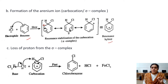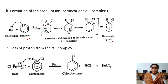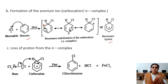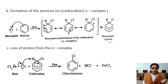In the third step, FeCl4- is present and it attacks the hydrogen on the sigma complex. As a result, chlorobenzene is formed. The hydrogen is removed from the system by giving away its electrons.